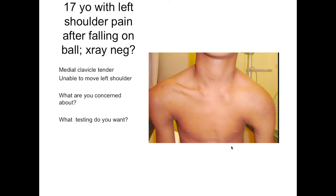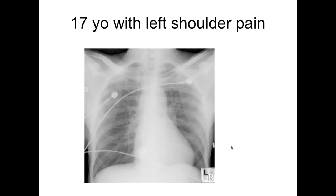A 17-year-old with left shoulder pain after falling on a ball. What strikes you about this x-ray? His clavicle — is this clavicle abnormal, or is this one abnormal? If he's complaining of pain on his left side, I go to the other side. The clavicle has kind of disappeared there. What could that be? You get an x-ray and oftentimes these x-rays are negative. But this patient can't move his shoulder and is very tender over his sternum and medial to his sternum. What's dislocated? Sternoclavicular dislocation.